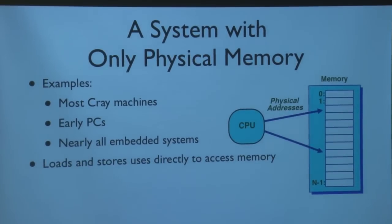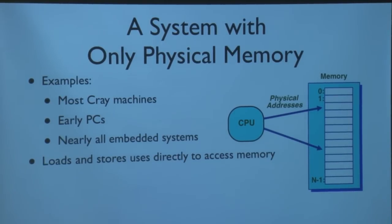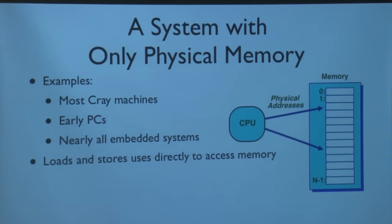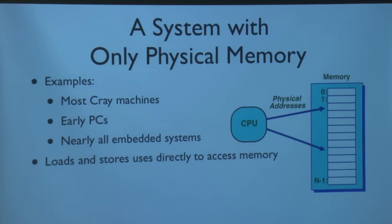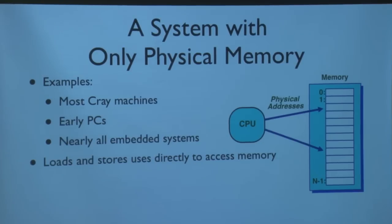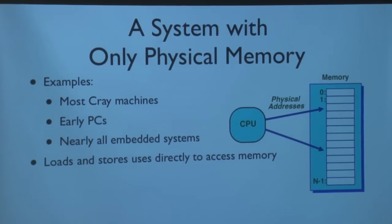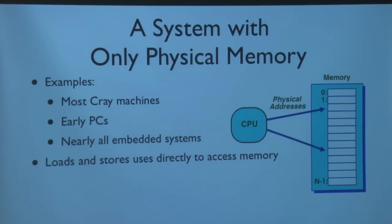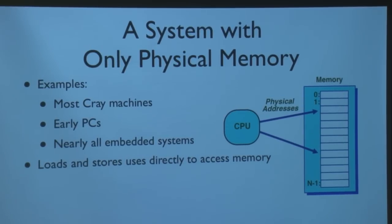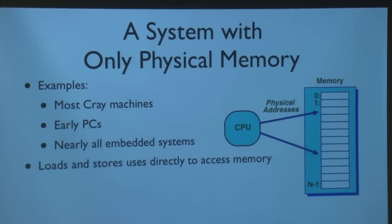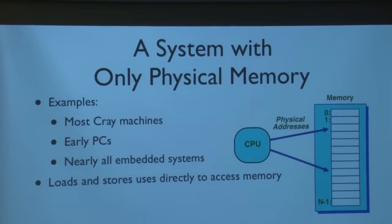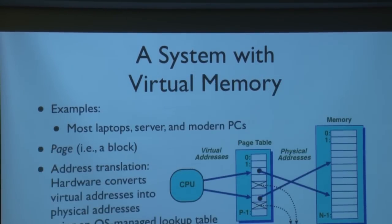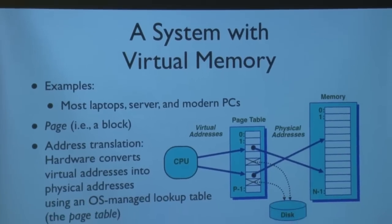Here's a system that doesn't have virtual memory — it has only physical memory that the program can access. Examples are most Cray machines, some early personal computers, and nearly all embedded systems. The CPU issues physical addresses directly accessing bytes located on the DRAM. This is a big problem when you want to add multiple processors or users, or want more memory than physical memory. These systems aren't used in most modern devices today.